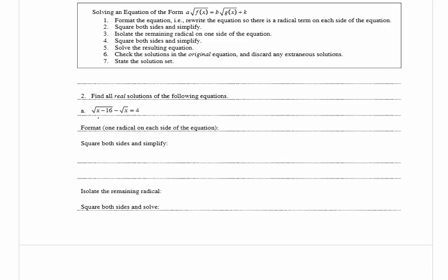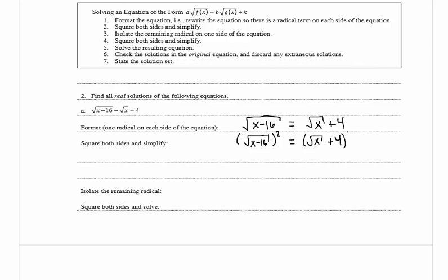In part a we have the square root of x minus 16 minus the square root of x is equal to 4. The first step is to get one radical on each side, so we add the square root of x to both sides and get the square root of x minus 16 equals the square root of x plus 4. Now we square both sides: the square root of x minus 16 squared equals the square root of x plus 4 squared.